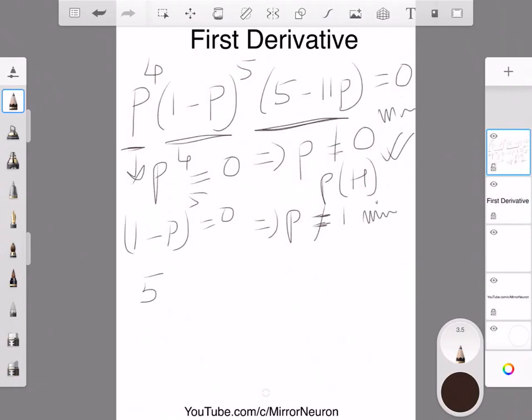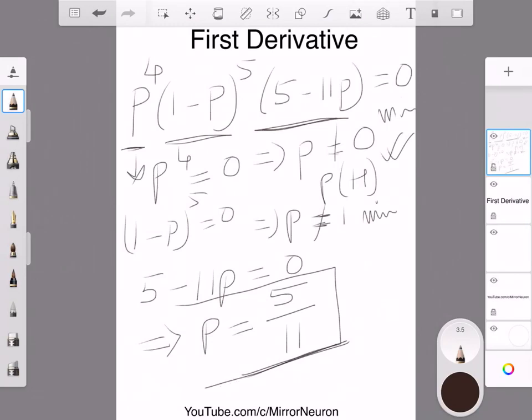So, what we are left with is the last factor here, which is 5 minus 11 P equal to 0. And this gives the probability of getting head is nothing but 5 over 11. And this is the exact same value we got, remember, when we did this manually.